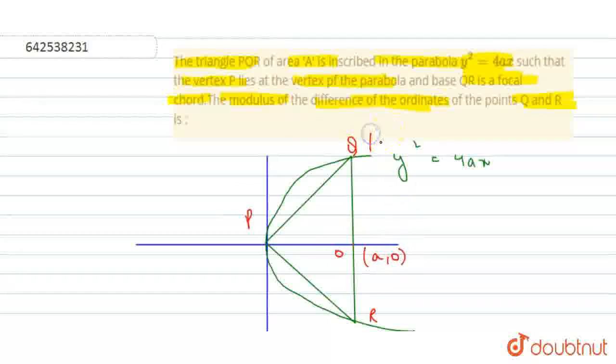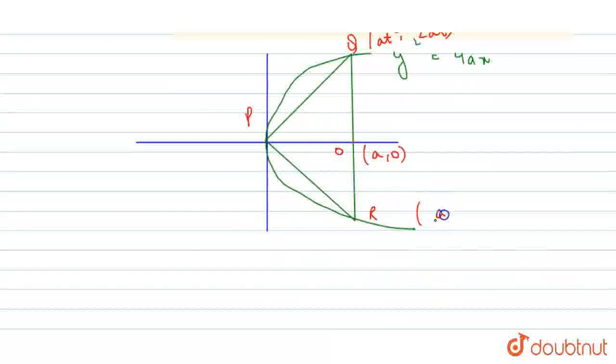Coordinates of Q will be (AT², 2AT) and R coordinates will be (A/T², -2A/T). P is the center, so P is at (0, 0).